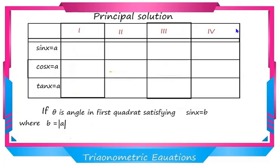Now let us find the principal solutions of trigonometric equations. It is sufficient to understand the method for sin x = A, cos x = A, and tan x = A, since the remaining trigonometry functions are reciprocals of these. If θ is the angle in the first quadrant satisfying sin θ = B, where B = |A|, first find the value of θ such that sin θ = |A|, ignoring the sign to recognize the value of θ.